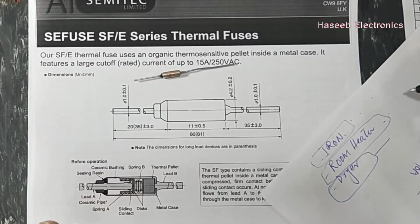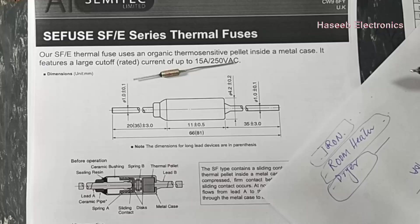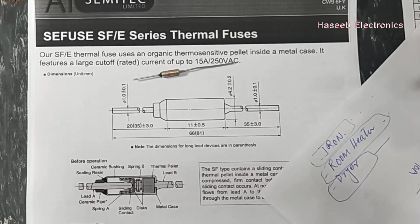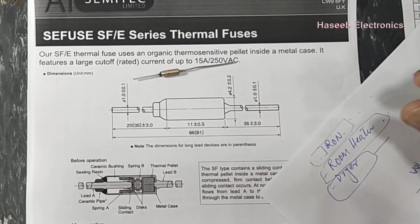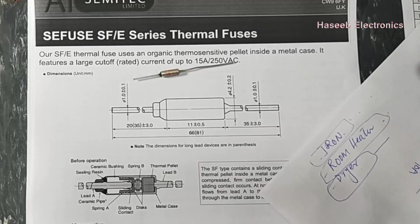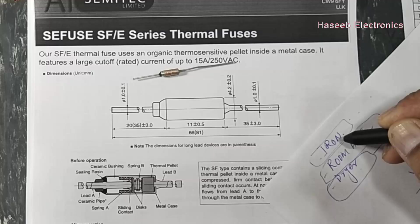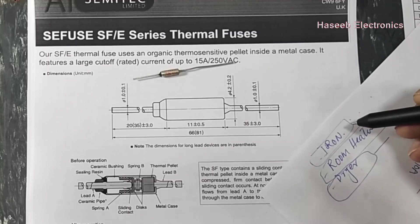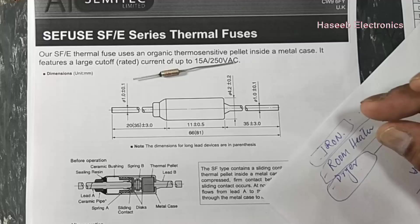So inside these machines and appliances there is a current limiting fuse to limit the current, and there is a special fuse called a thermal fuse that is always installed inside the body, inside the appliance.